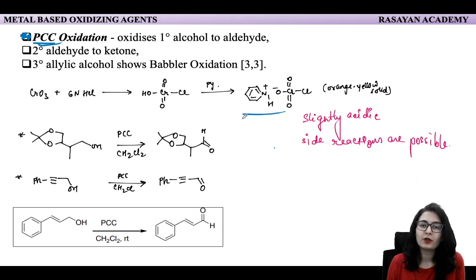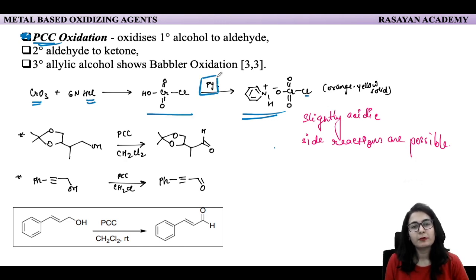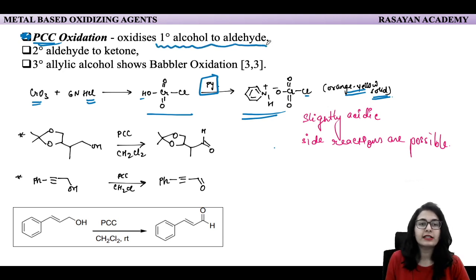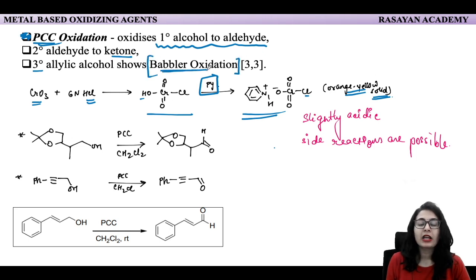PCC is pyridinium chlorochromate. There is a pyridinium ion and chlorochromate complex. When we react chromium trioxide with 6N HCl, that gives an intermediate — chlorochromic acid — and on reaction with pyridine, it grabs the proton and forms a salt. That is an orange-yellow solid: PCC. It oxidizes primary alcohol to aldehyde only, secondary alcohol to ketone, and tertiary allylic alcohol undergoes 3,3-sigmatropic rearrangement and oxidation — known as Babler oxidation. This is another name reaction to remember.